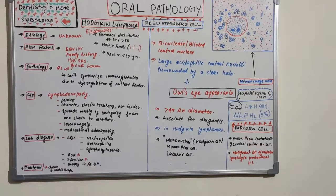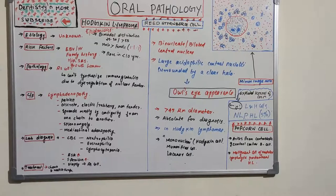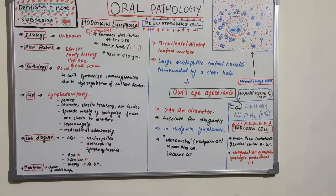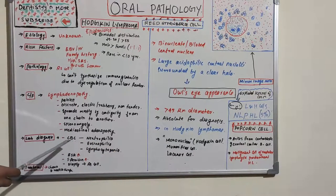Other associated conditions include pruritus, nephrotic syndrome, immunohemolytic anemia, hypercalcemia, and thrombocytopenia. Additional systemic symptoms include fever, drenching night sweats, and weight loss. These are important clinical features of Hodgkin's lymphoma. Now moving on to lab diagnosis — when we take the complete blood count (CBC), we observe certain characteristic findings.